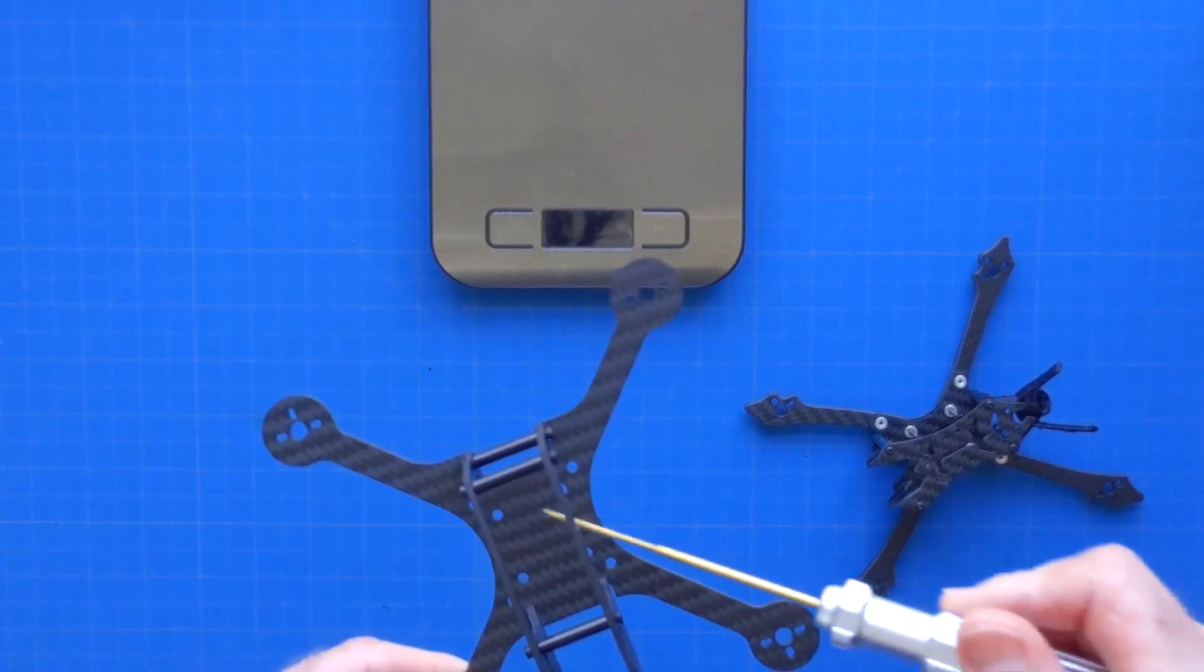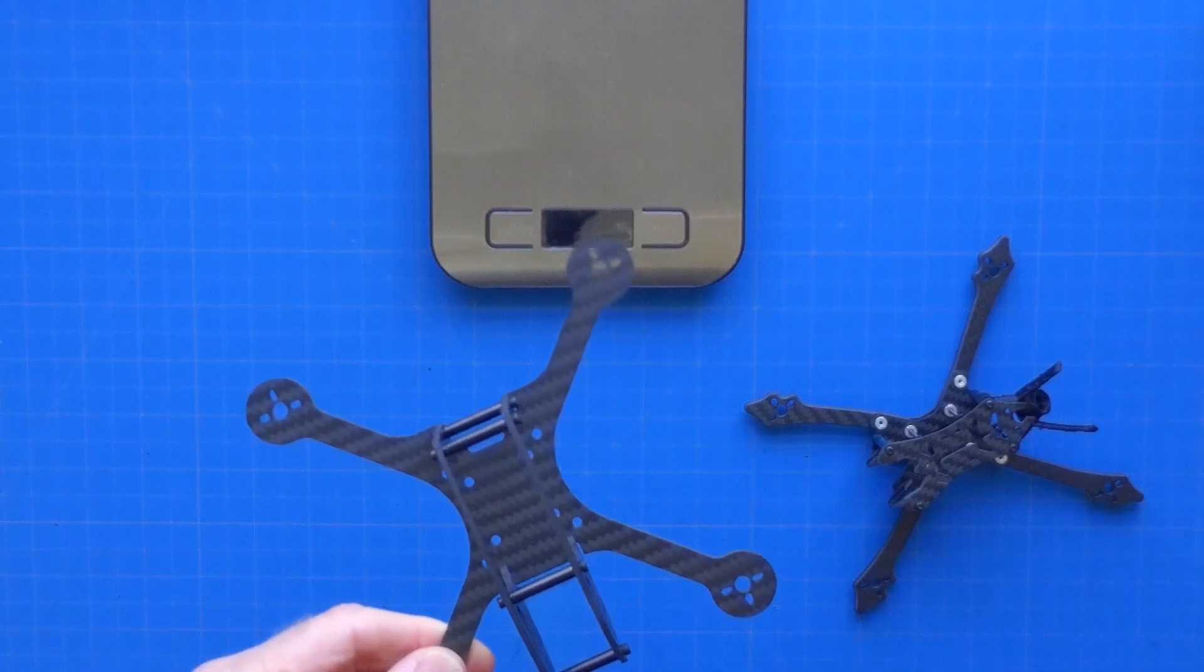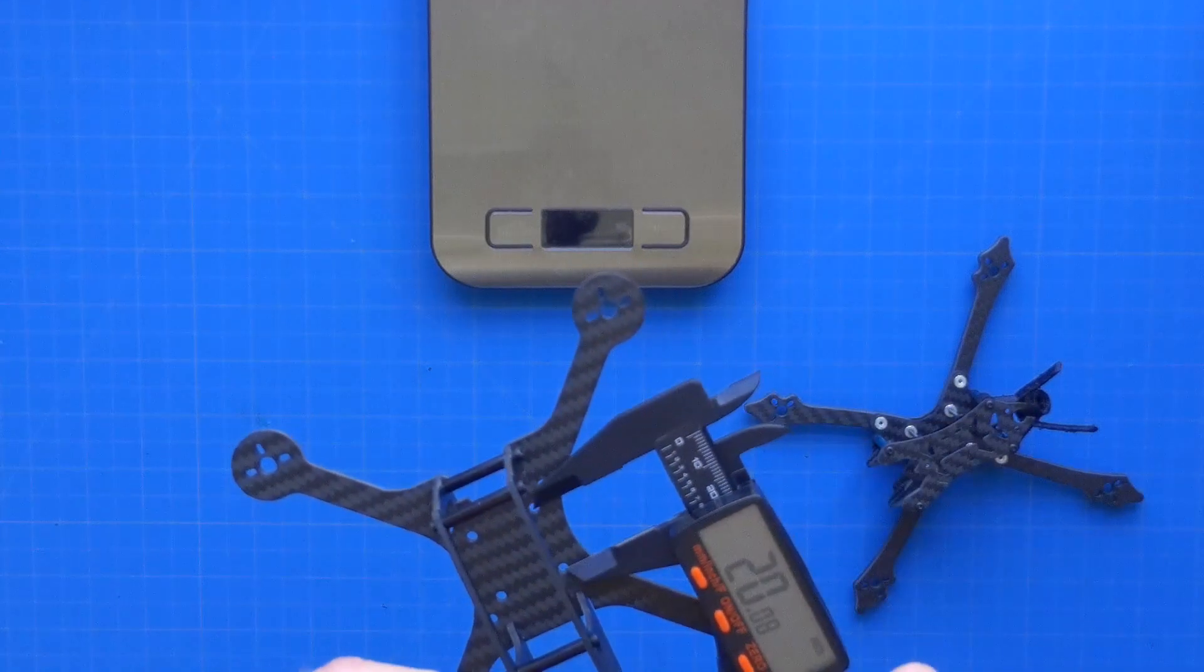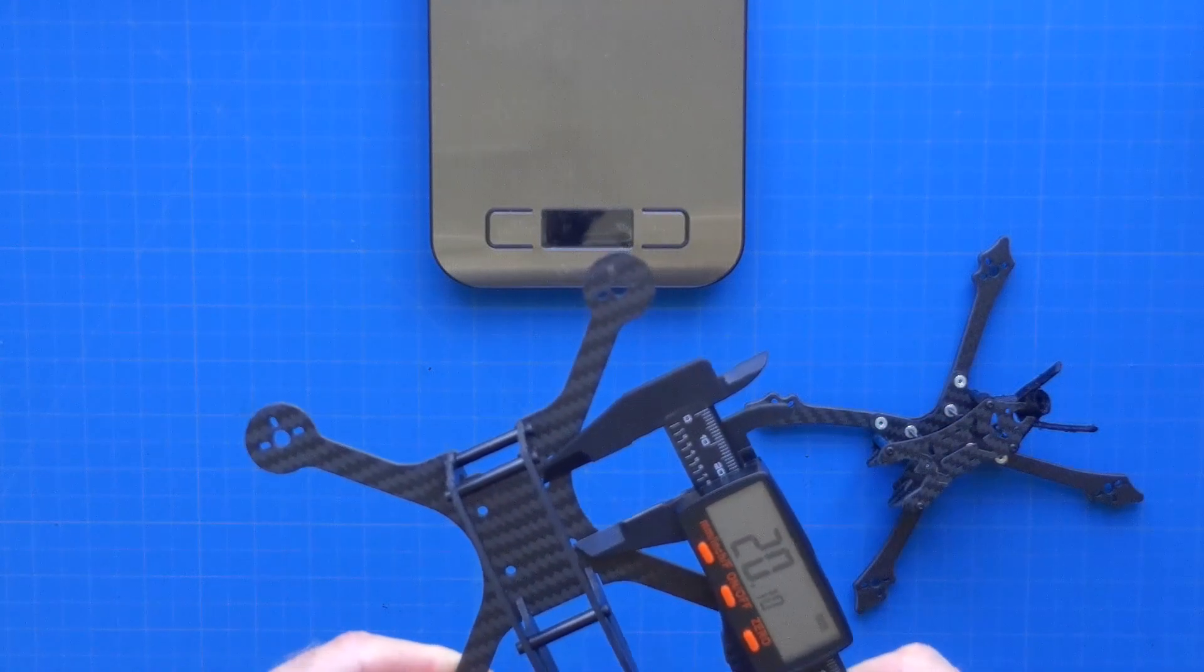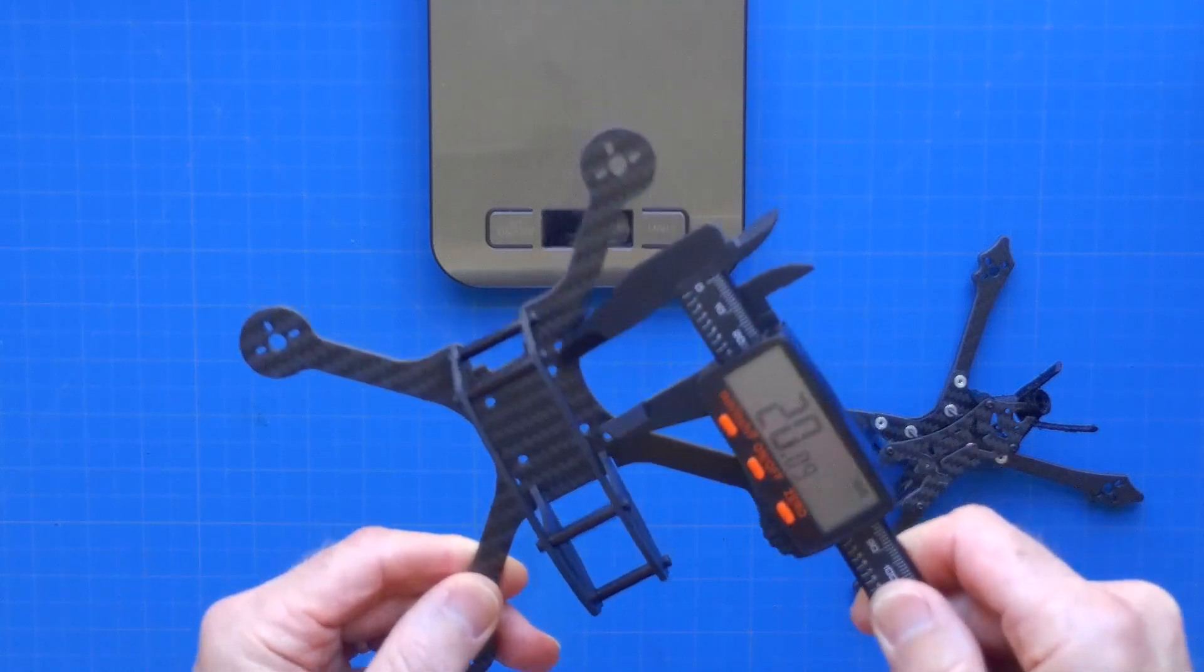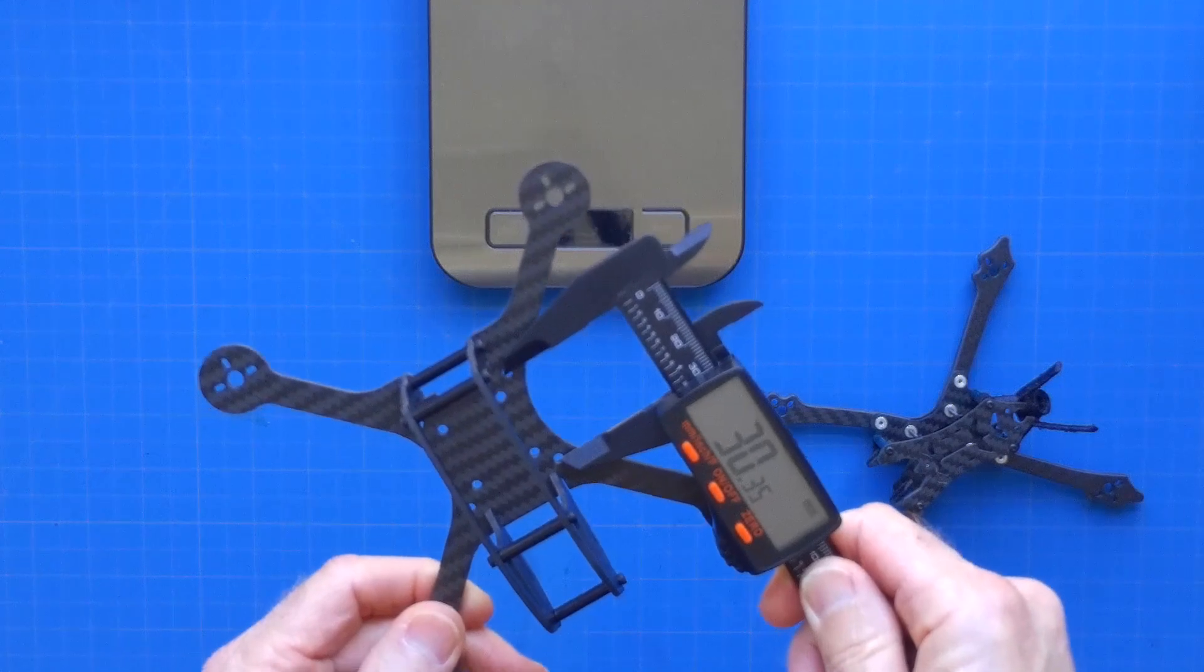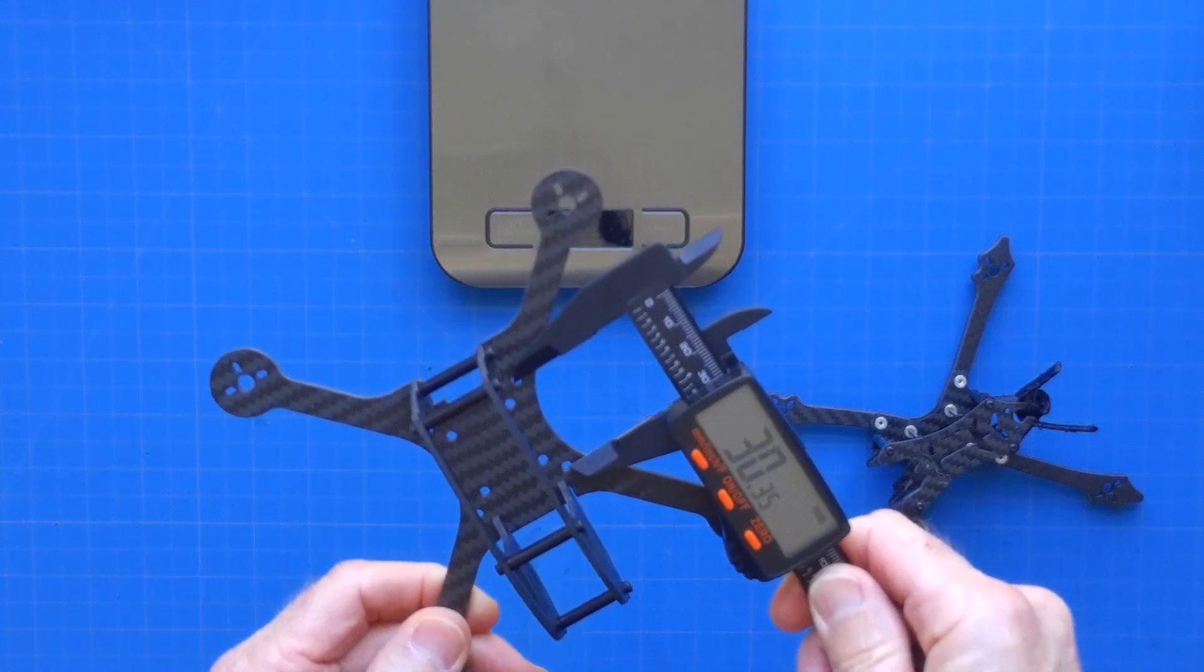We'll now take a look at the mounting pattern for the flight stack on the FlexRC Ascent. As you can see, this holds 20x20 but wait, it also looks like it holds the standard 30.5x30.5 as well.